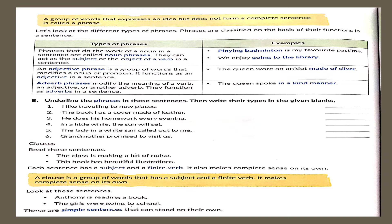Look at the second exercise: underline the phrases in these sentences and write their types. First: I like traveling to new places. 'Traveling to new places' is the phrase. Asking the question 'what' — I like what? — the answer is 'traveling to new places.' Noun phrases always answer the question 'what,' hence this is a noun phrase. Second: the book has a cover made of leather. 'Made of leather' is an adjective phrase because it describes the noun 'the book.'